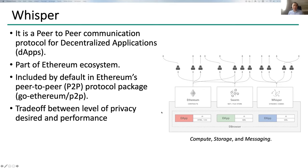The second communication protocol we will discuss is Whisper — a peer-to-peer communication protocol for decentralized applications. A decentralized application runs on a distributed computing system like Ethereum. Whisper is part of the Ethereum ecosystem: Ethereum has three core components — EVM for computation, Swarm for distributed storage, and Whisper for messaging. It is included by default in Ethereum's Go protocol package.